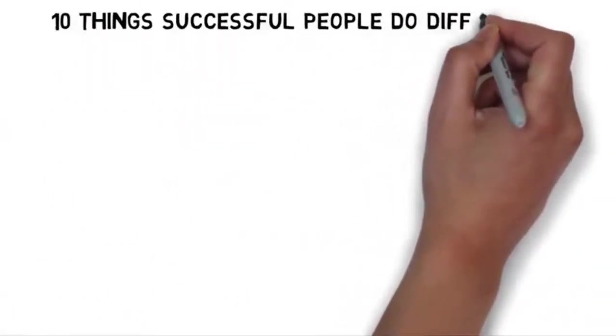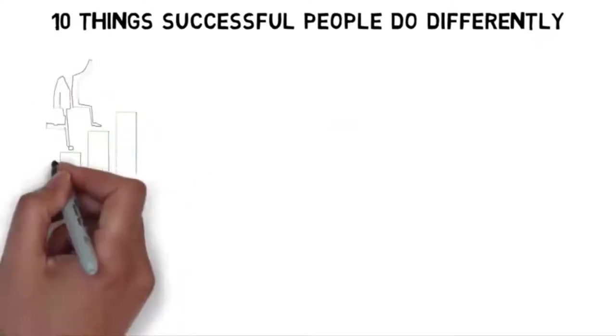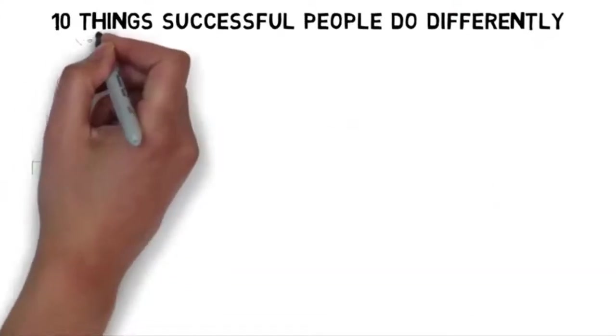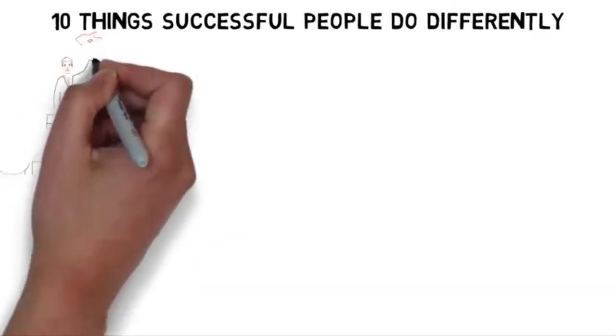10 Things Successful People Do Differently. The attainment of a specific goal or plan yields success. Being successful is a desire and a commitment.